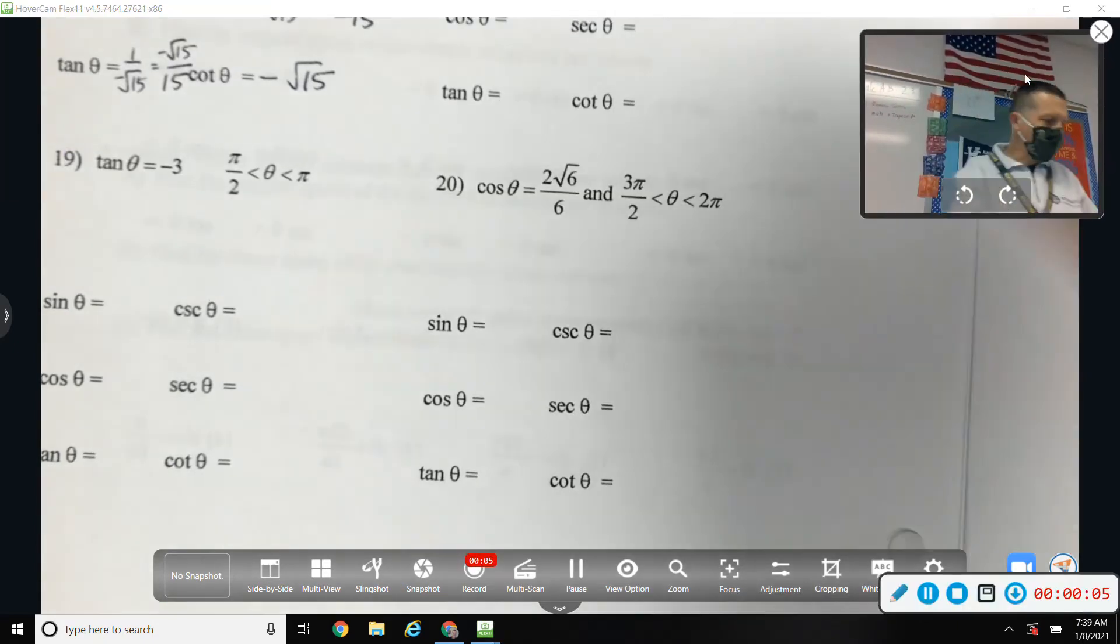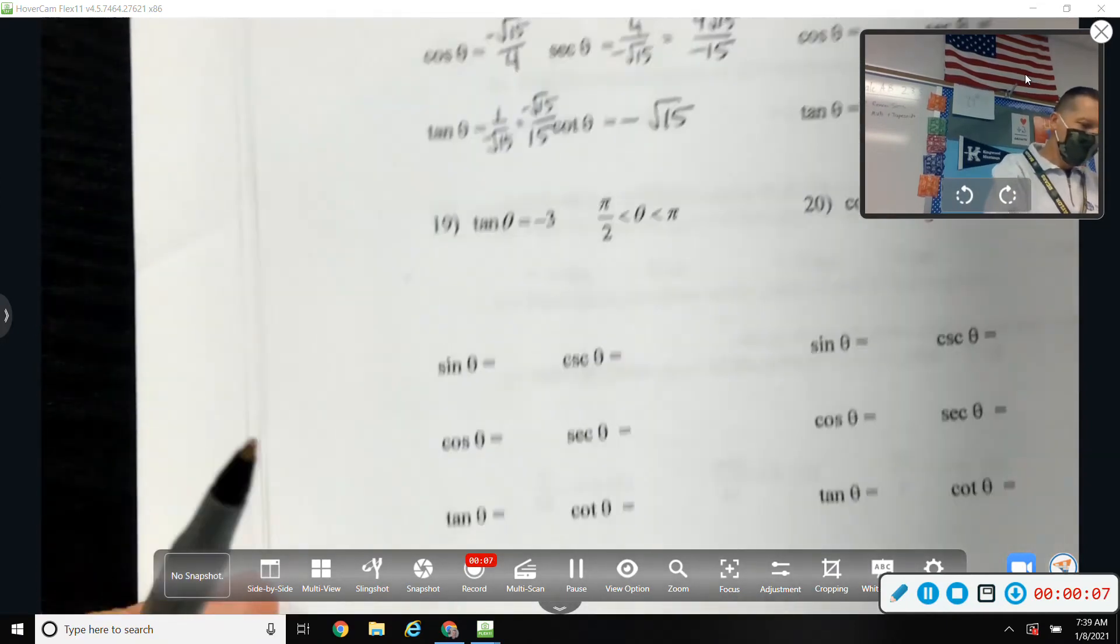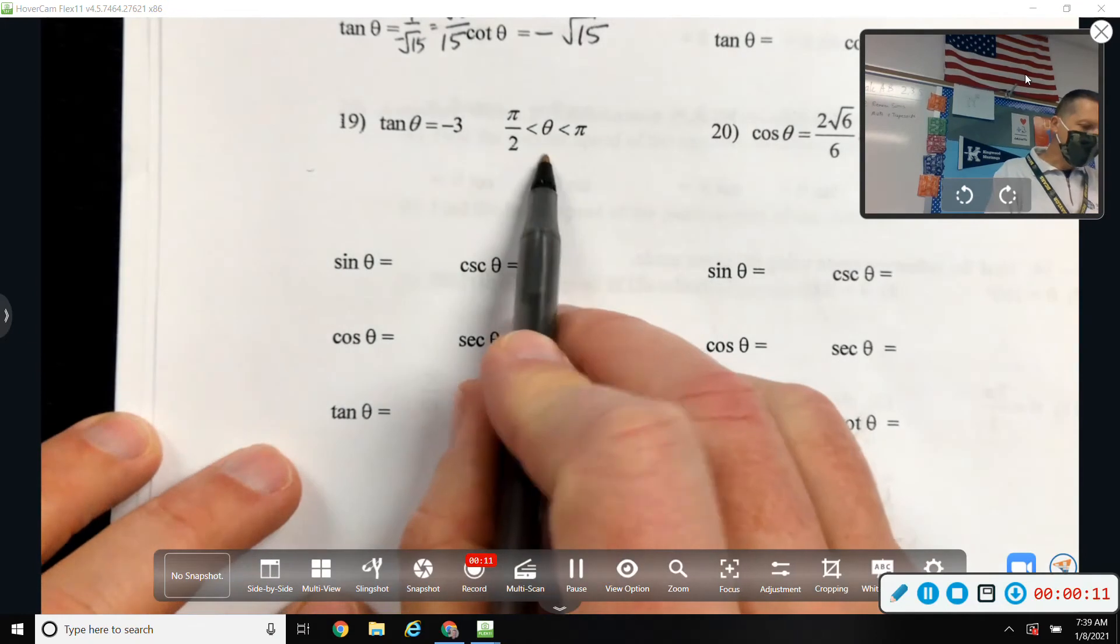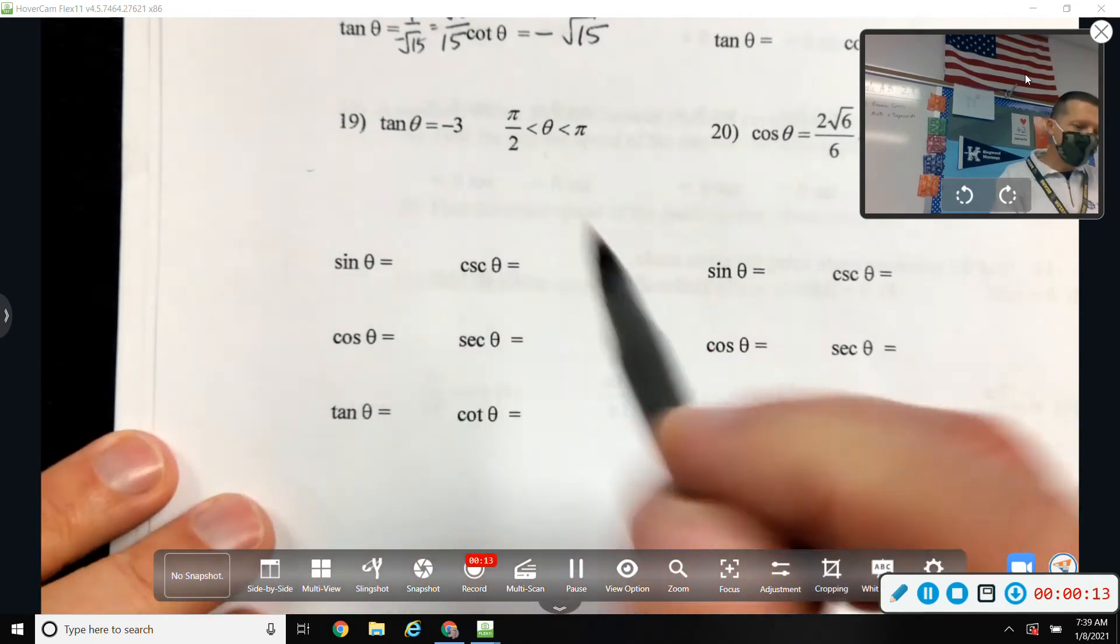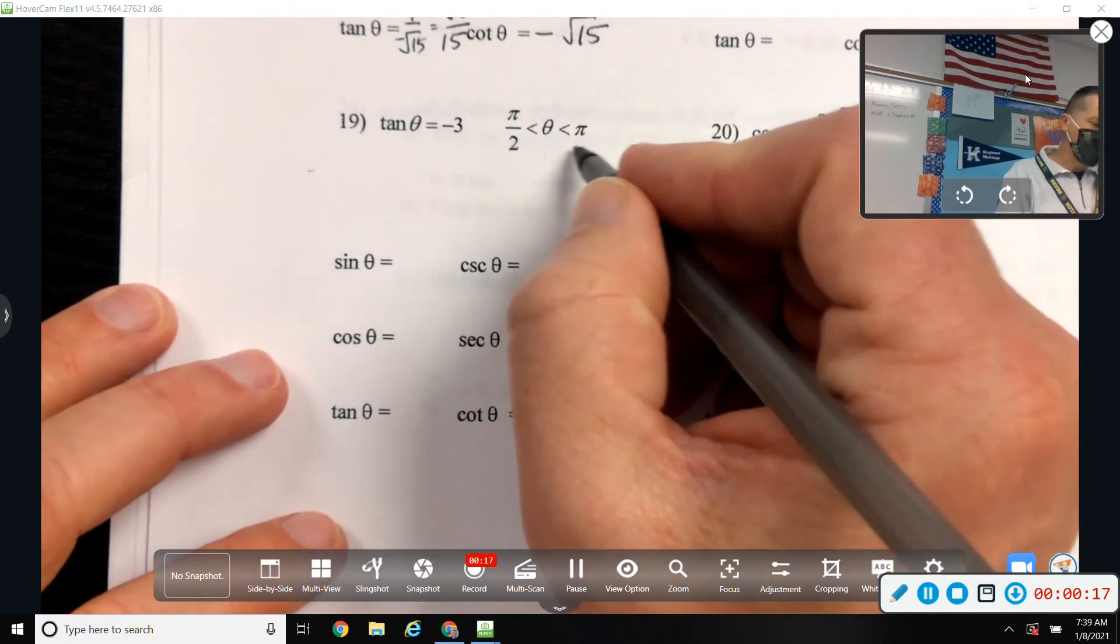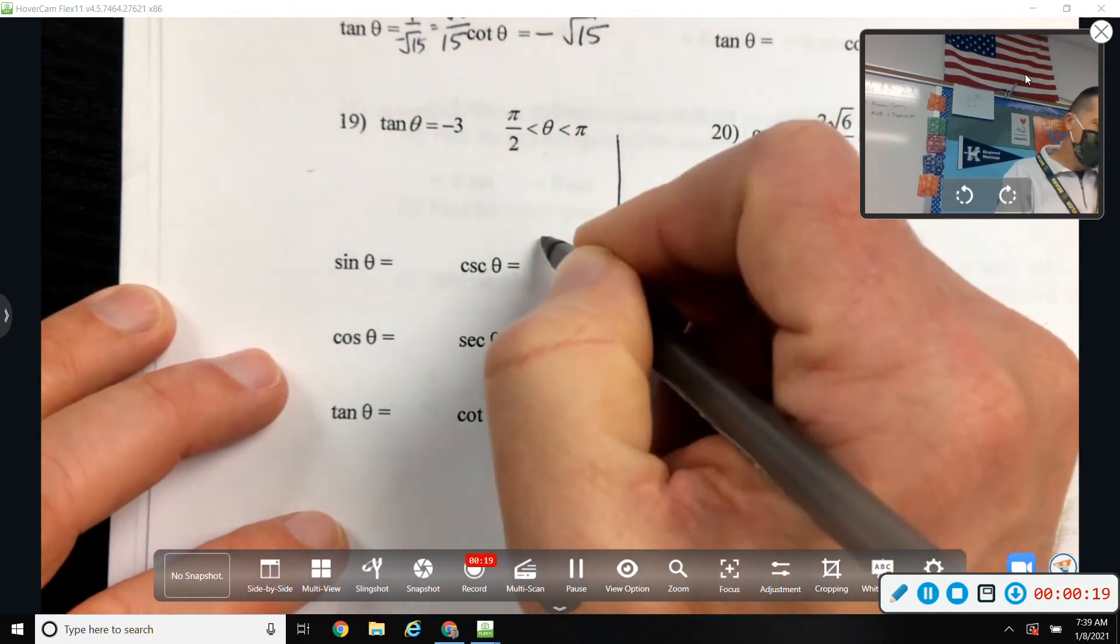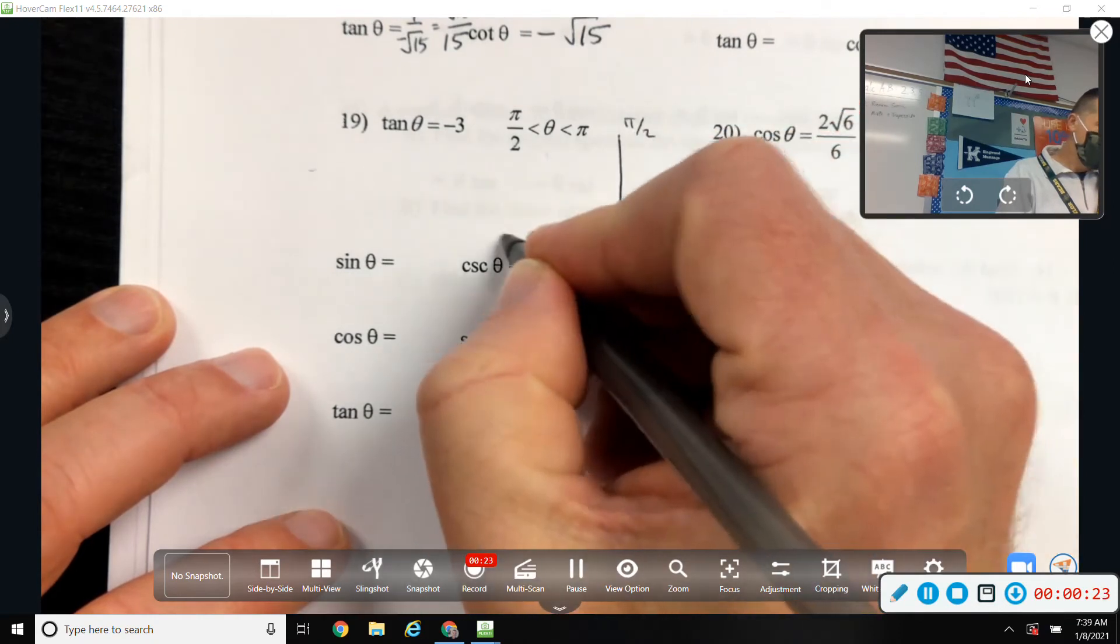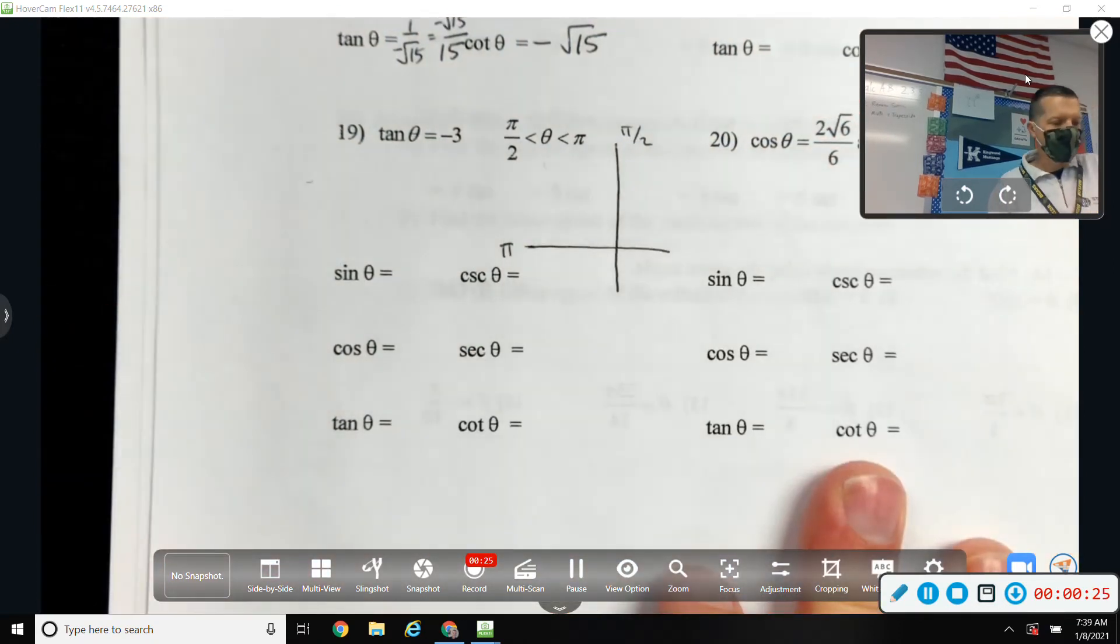Let's look at number 19 and 20 from worksheet 3. This just straight up tells us what quadrant we're in. I mean, it doesn't say quadrant, it says pi over 2 and pi. But if we remember where those are, it means our angle is in the second quadrant.